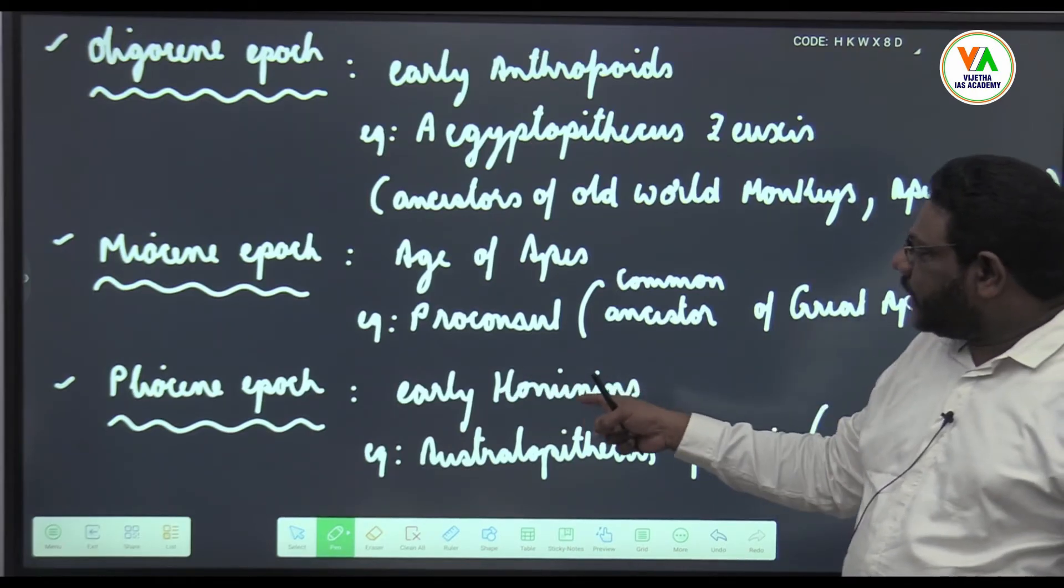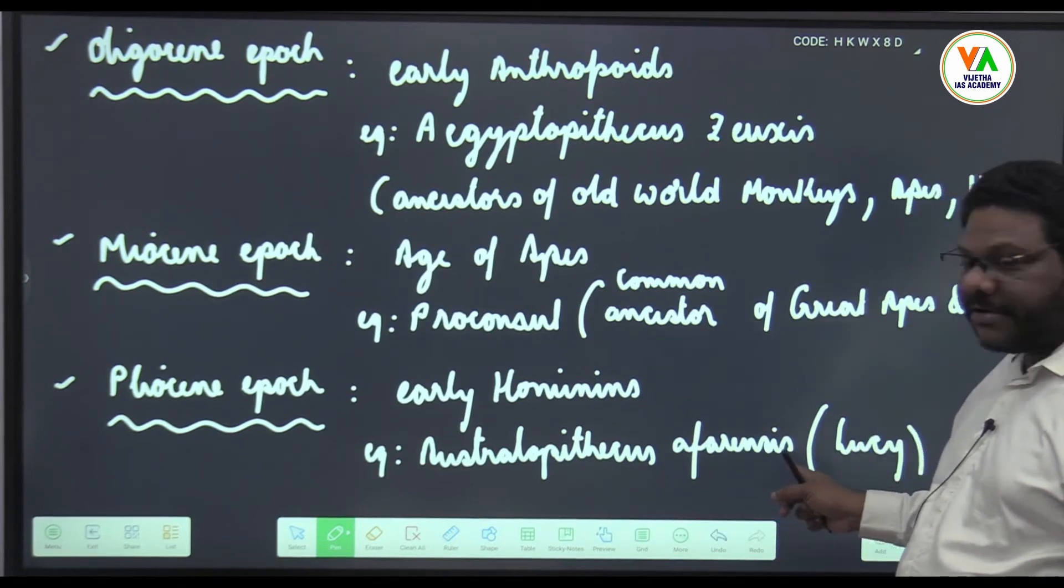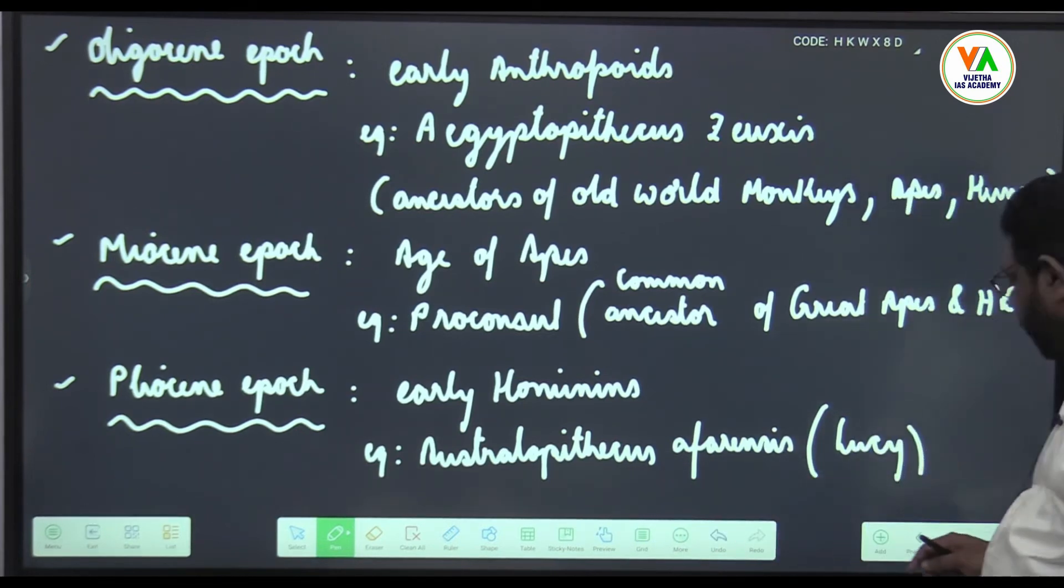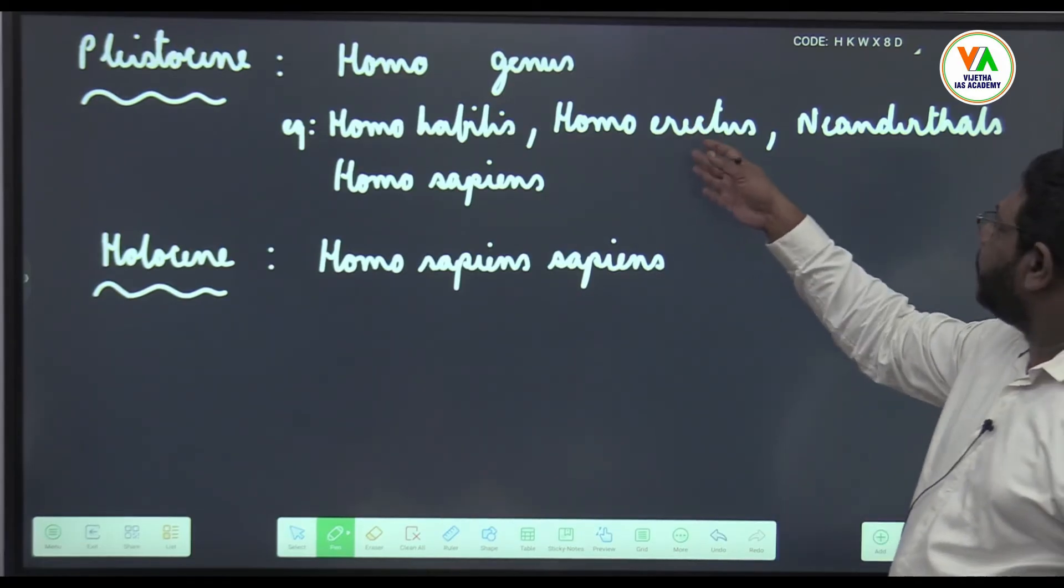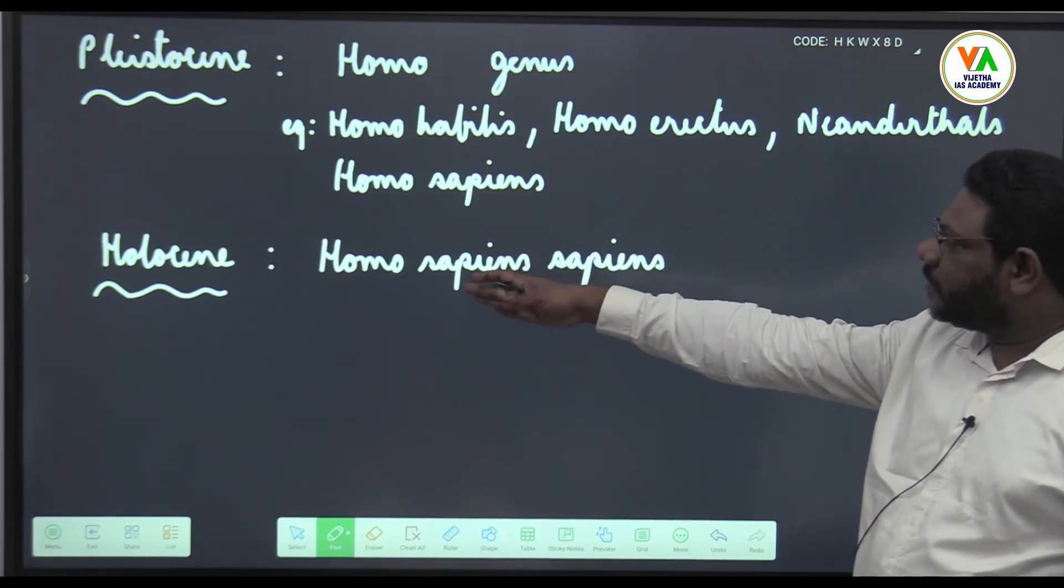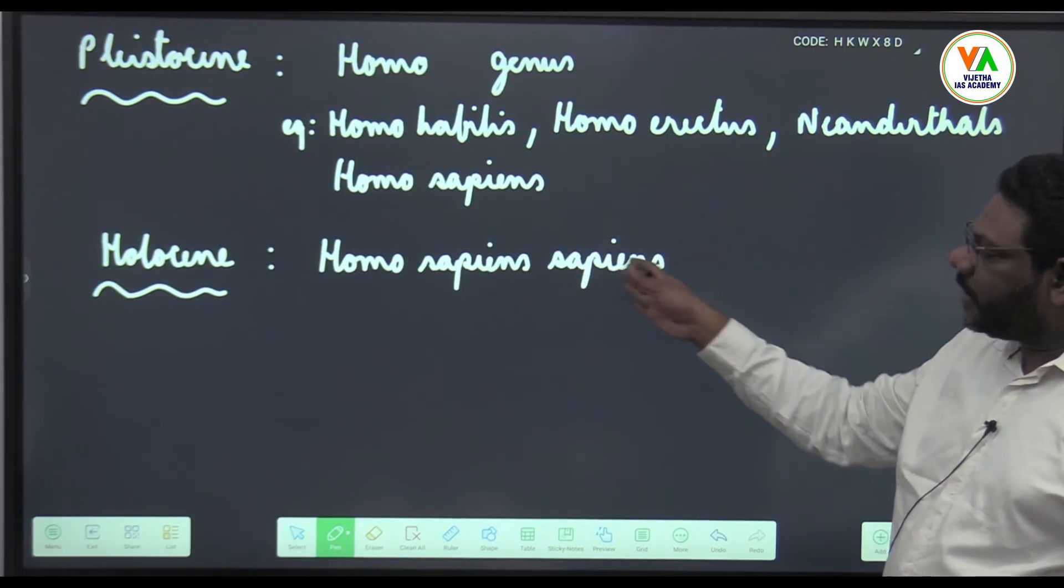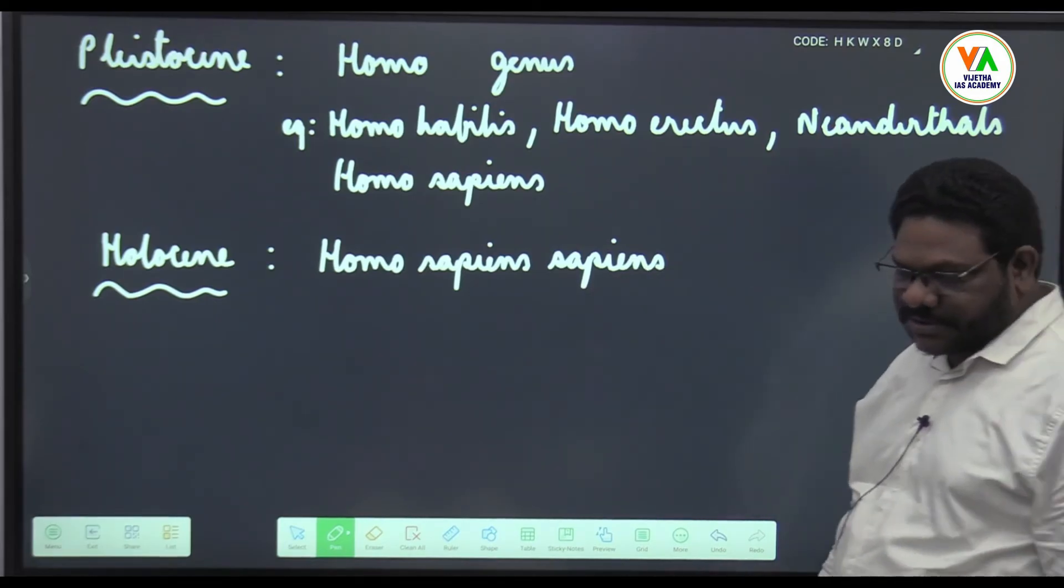Pliocene is early hominins. Early hominins is Australopithecus afarensis which is Lucy. Then in Pleistocene, all Homo genus, like Homo habilis, Homo erectus, Homo neanderthals, Homo sapiens came into existence. And Holocene, little bit more advancement I have shown, Homo sapiens sapiens.